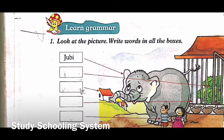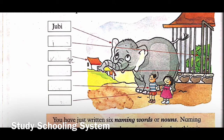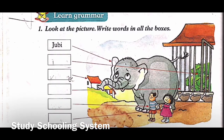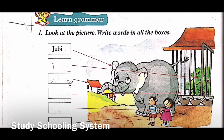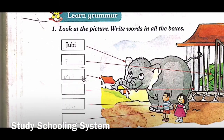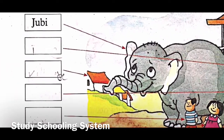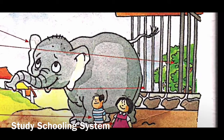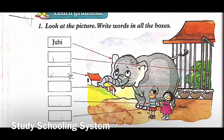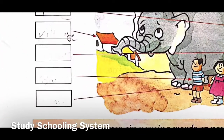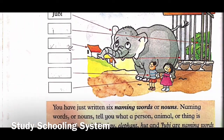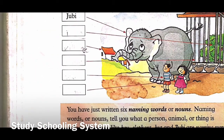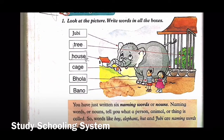Now let's label this picture. Number one: the first box is pointing to the animal - the elephant - and his name is Jubi. Number two: the arrow is pointing to a tree - you can see it's green bushes, that is a tree top. Number three: the box is pointing to a house - h-o-u-s-e. Number four: it's pointing to a cage - c-a-g-e. Number five: pointing to the boy whose name was Bola. Number six: pointing to the girl whose name was Bano.